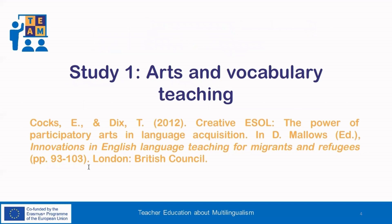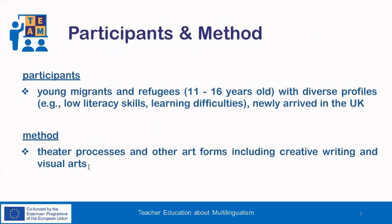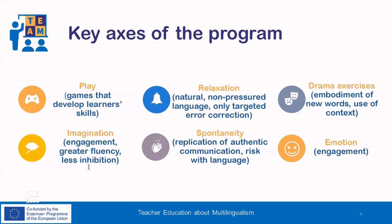So let's move on to our first study conducted by Cox and Dix in 2012, investigating arts and vocabulary teaching. The group of participants consisted of young migrants and refugees aged from 11 to 16 years old. The students had diverse profiles and were newly arrived in the UK. The present study examined the effects of theater processes and other art forms, including creative writing and visual arts, to teaching English as a second language. Some of the key axes of the program were: play, in the form of games that develop learner skills; imagination,